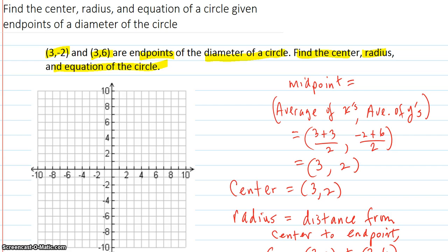So what's going to work on most of these problems is to just plot these two points: (3, -2) right there, and (3, 6). That's up there.